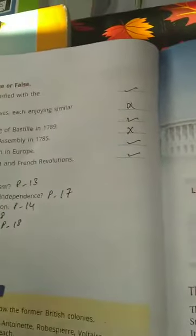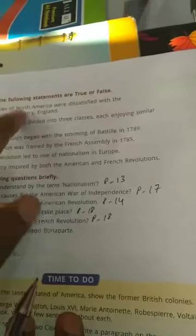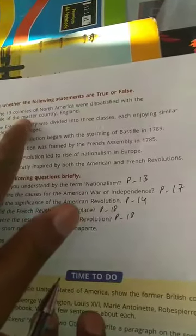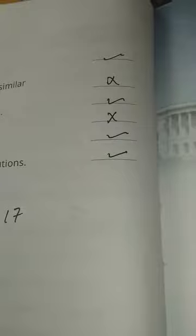Now we shall do the question and answers. Sorry, true or false. Thirty colonies of North America were dissatisfied with the rule of the master country, England. True. The French society was divided into three classes, each enjoying similar rights and privileges. False.